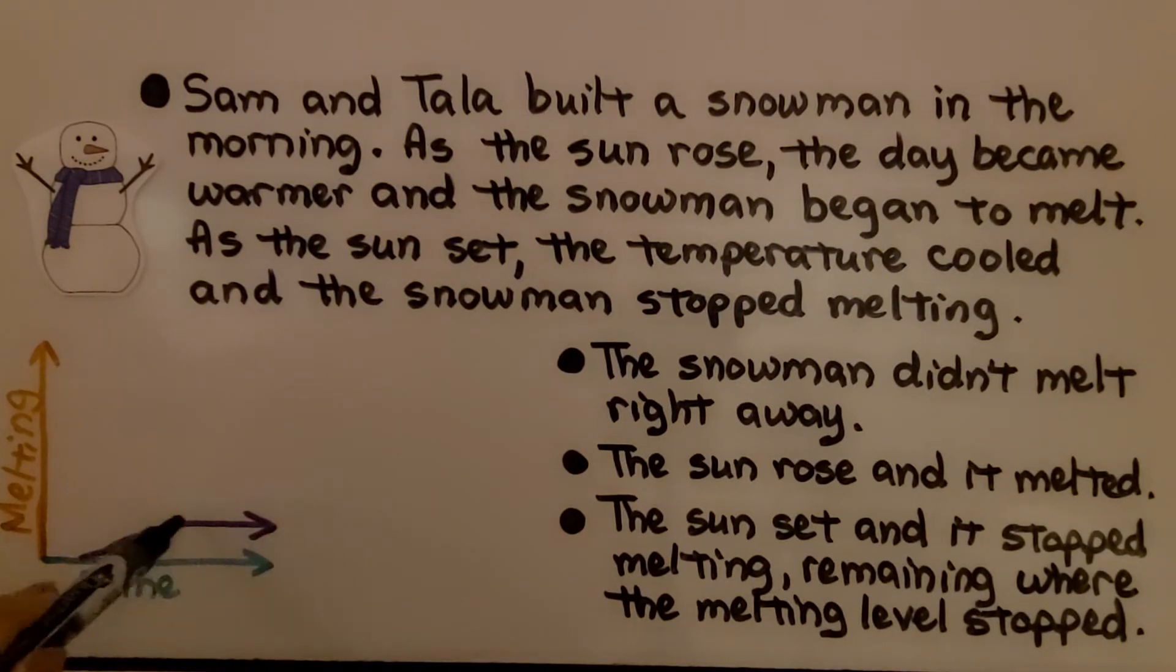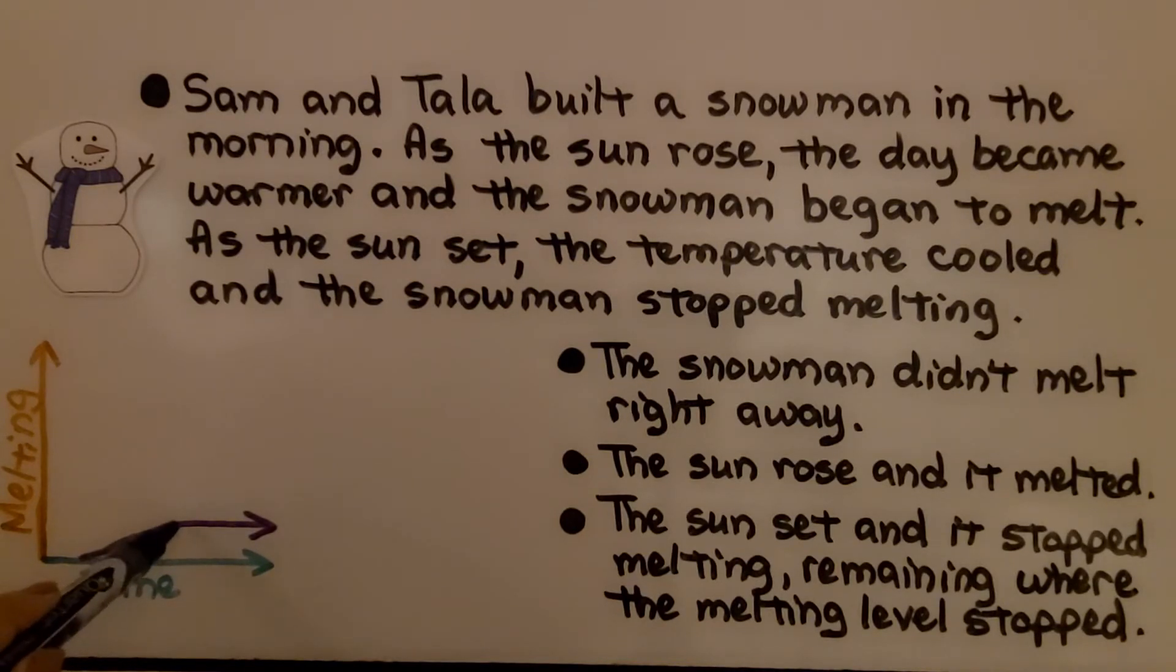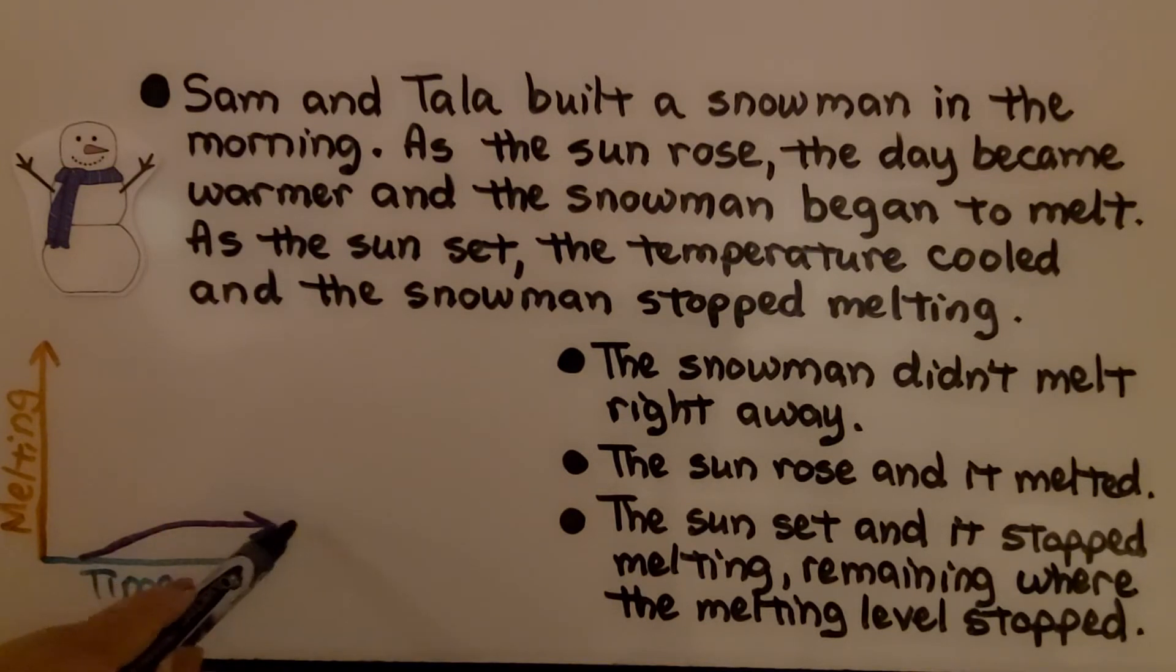We can see it starts late, about here. Then the sun comes up and it starts melting. But then when the sun went down, it stopped melting, so it stayed constant.